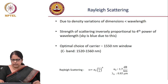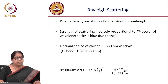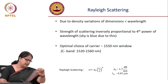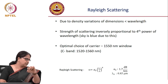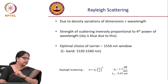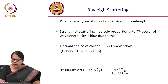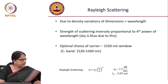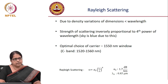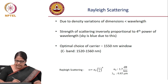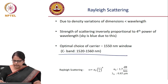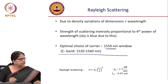Rayleigh scattering arises from refractive index variations of dimensions smaller than the wavelength — any sub-wavelength optical density variation causes scattering, not just discrete particles. Since scattering strength is inversely proportional to λ⁴, this drives the optimal carrier wavelength choice toward the 1550 nm window.